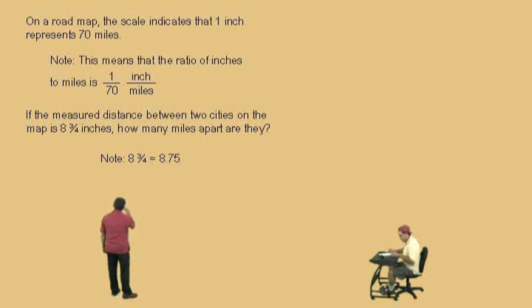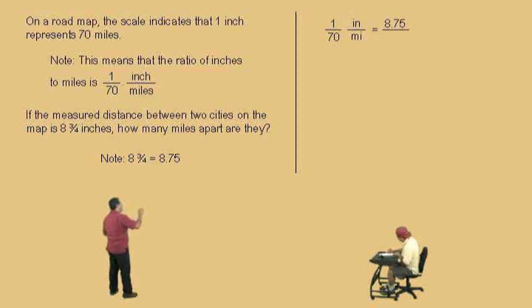That's 8 and 3 fourths inches, right? All right. So, let's write our first ratio. And that ratio is coming from the scale on the map. One inch is 70 miles, and we measured 8.75 inches, right? We put that on top, and x is on the bottom.